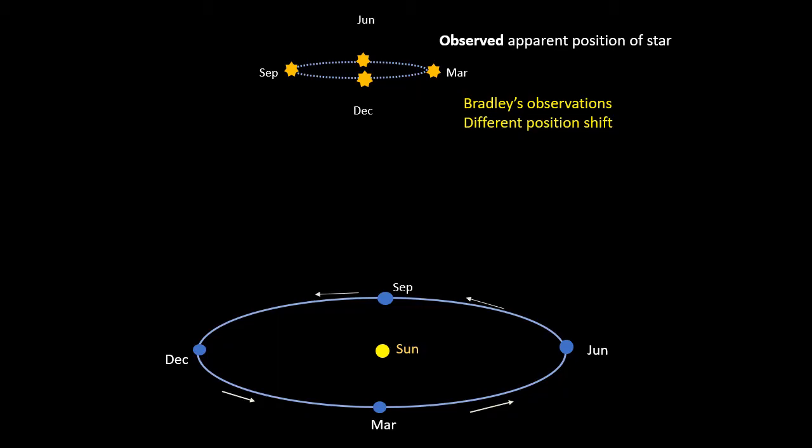And as I'll explain next, Bradley's discovery not only confirmed the heliocentric theory as being correct, but also allowed an accurate measurement of the speed of light.